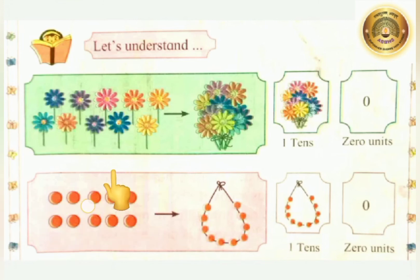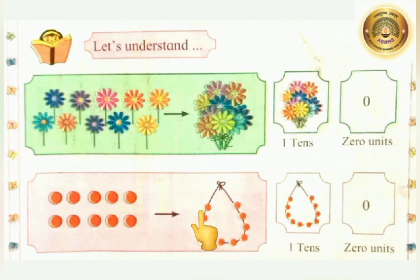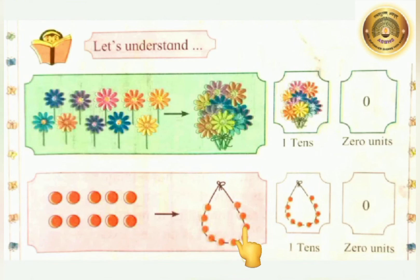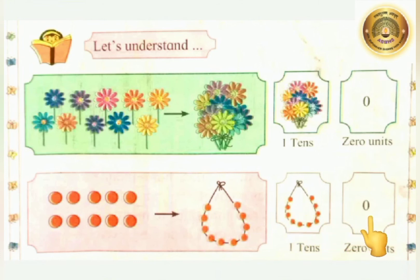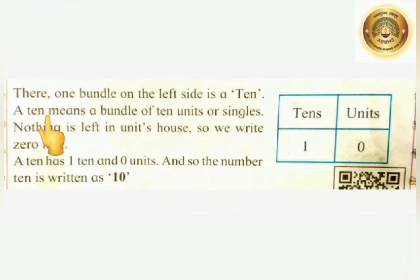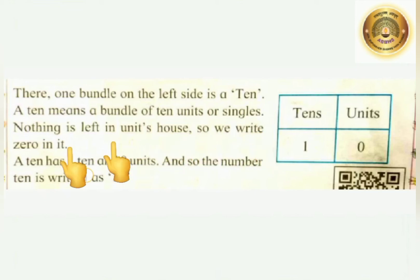Here, bits are given — let us count: 1, 2, 3, 4, 5, 6, 7, 8, 9, 10. There are 10 single bits, which means it is 10 units. Now, what we are going to do? These 10 units we are going to put on a string: 1, 2, 3, 4, 5, 6, 7, 8, 9, 10. The string becomes 1 ten. So these tens we are keeping on the left side, and on the right side nothing means 0 units. One bundle on the left side is a 10. A 10 means a bundle of 10 units — nothing is left in the unit's house, so we write 0 in it. A 10 has 1 ten and 0 units, and so the number 10 is written as 10.